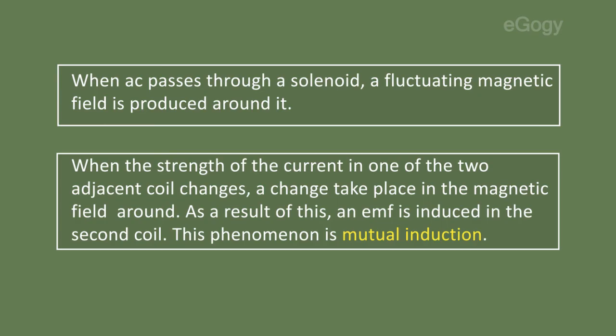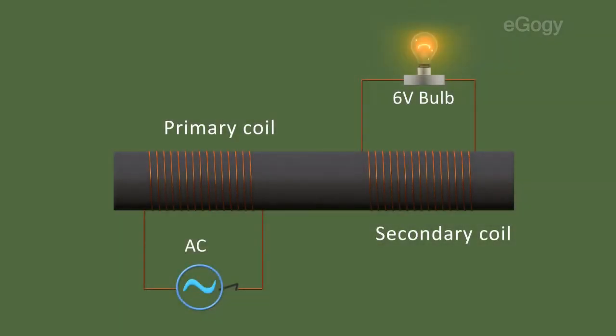This phenomenon is mutual induction. The EMF produced due to mutual induction and the number of turns in the coil are interrelated. If we increase the number of turns in the secondary, the intensity of the bulb will also increase.